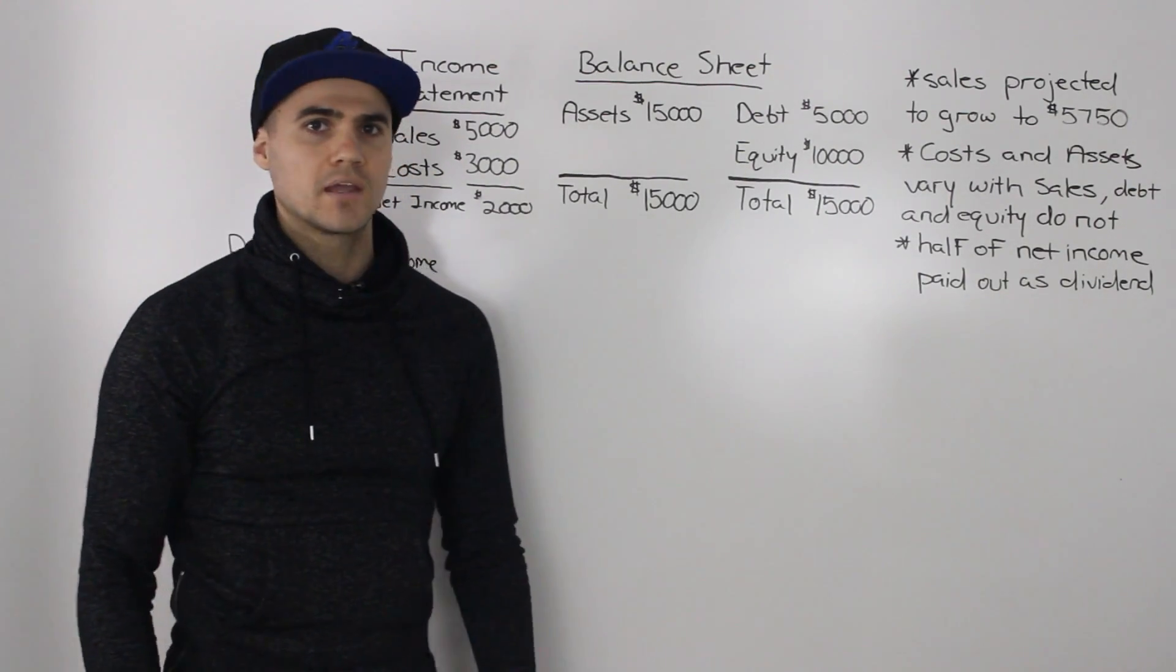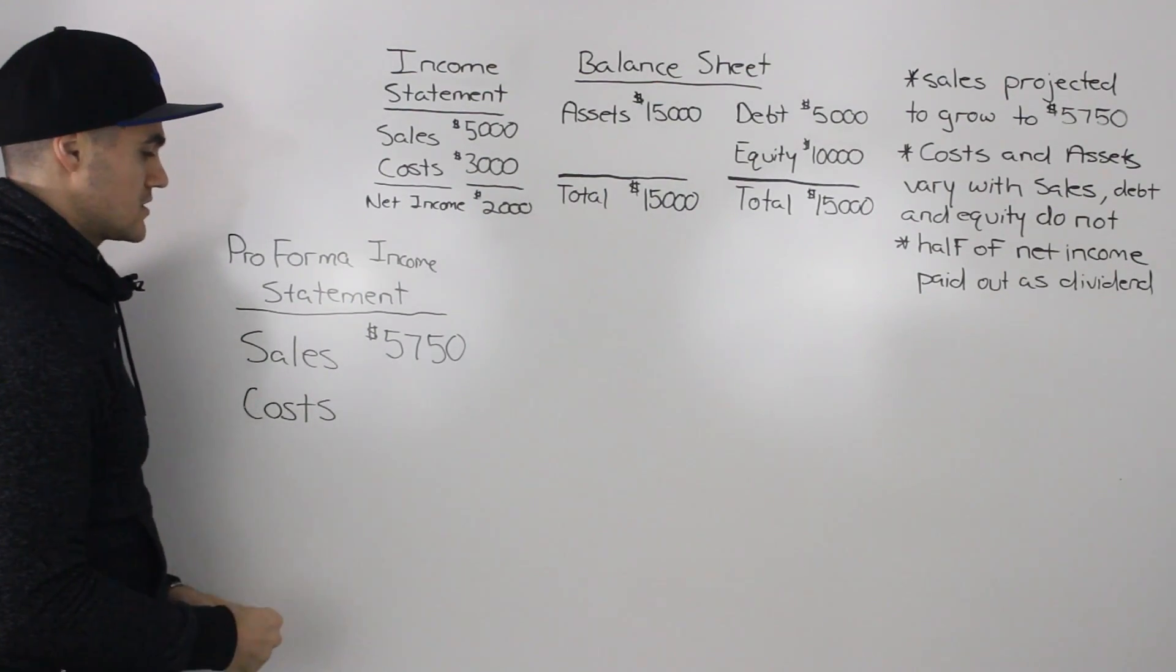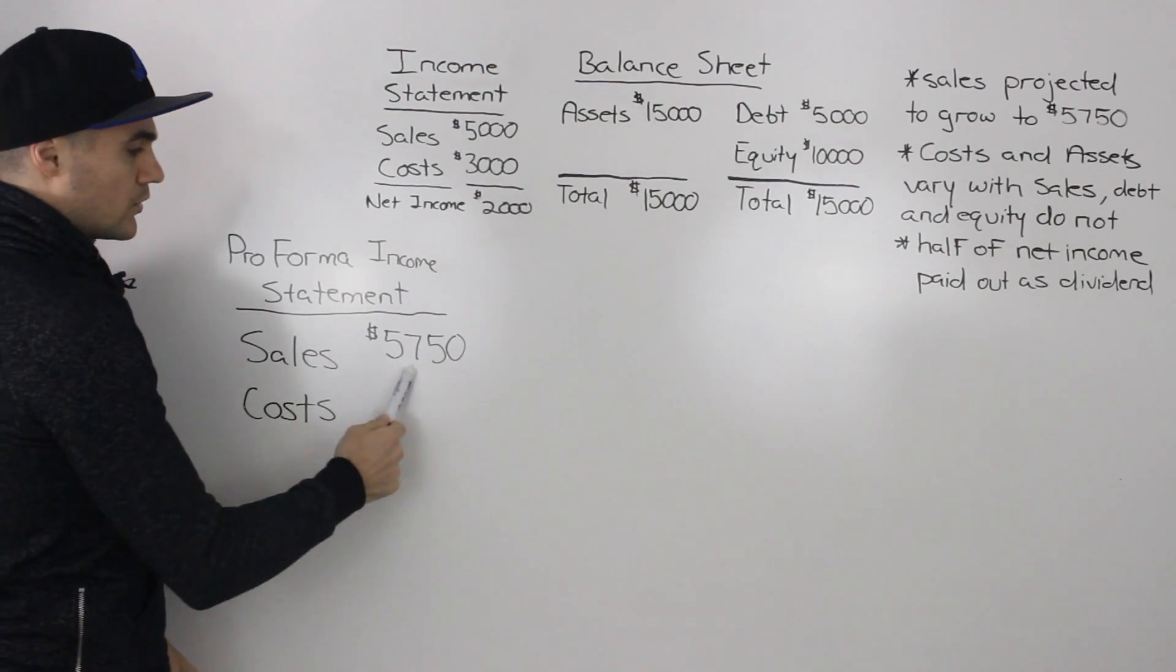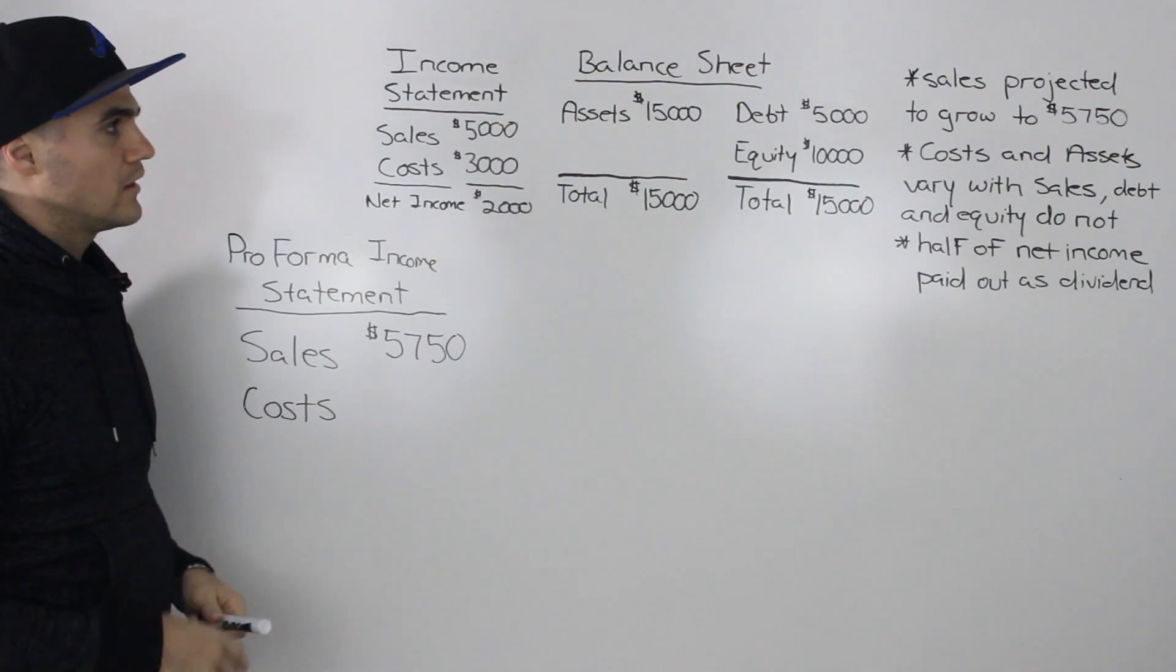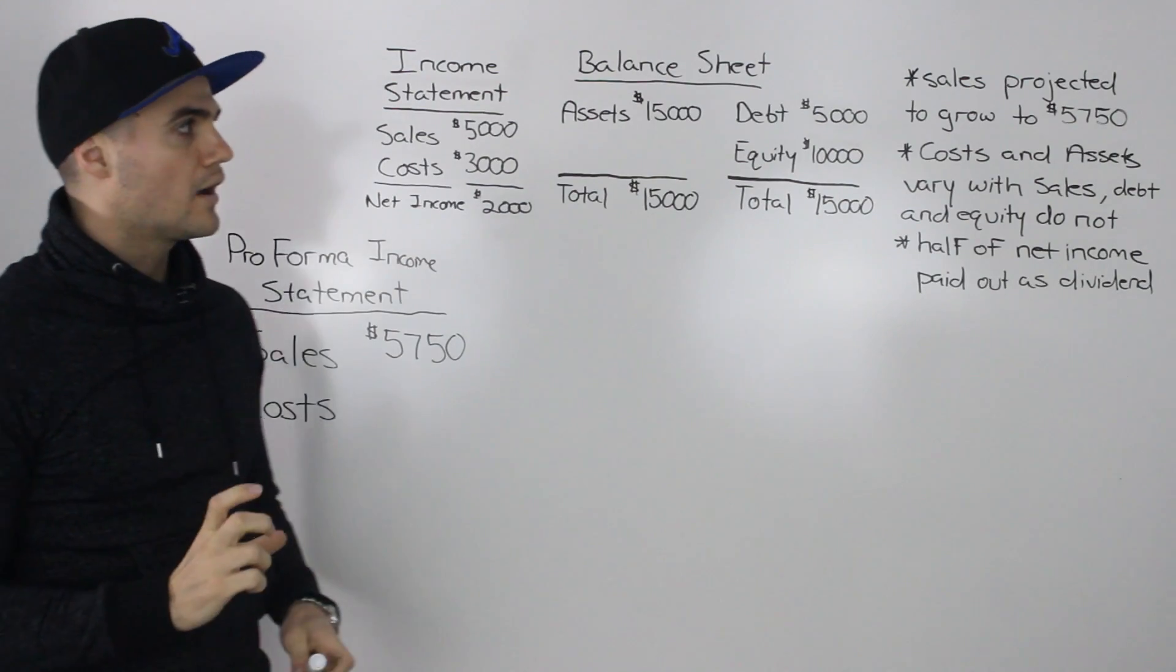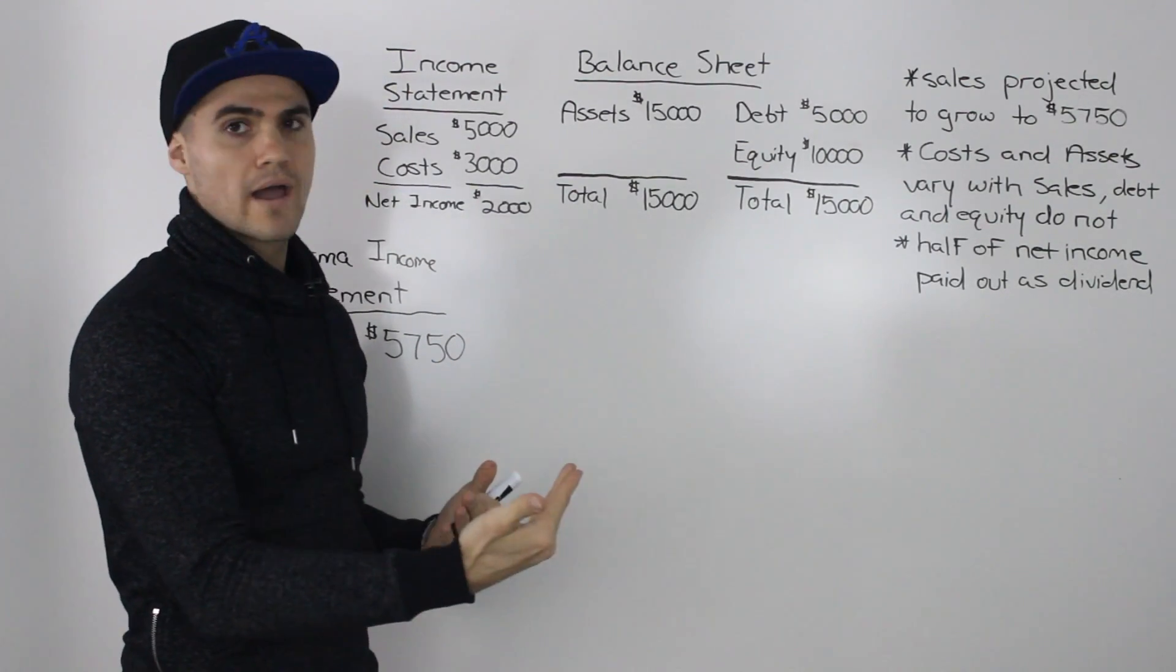So let's start off by making the pro forma income statement or the forecasted income statement. We're told that the sales are going to grow to $5,750. Now, what about the costs? Well, if you notice in this question, we're not actually given the percentage that the sales have grown by.